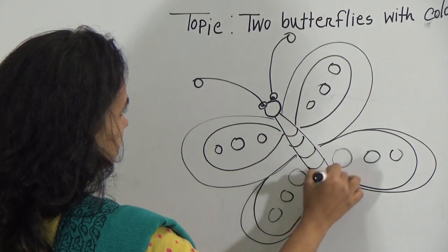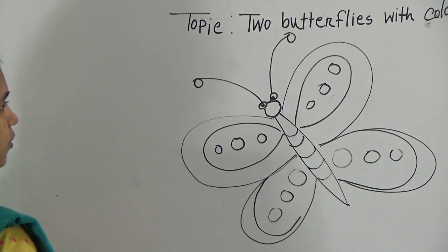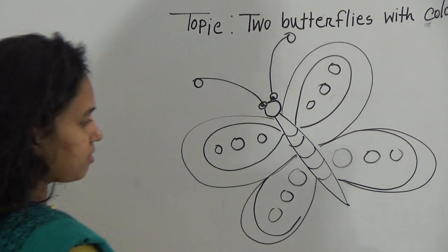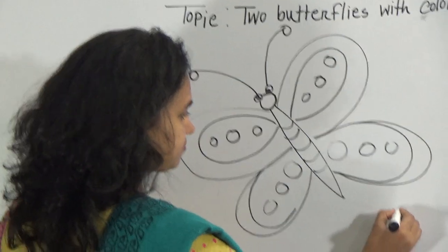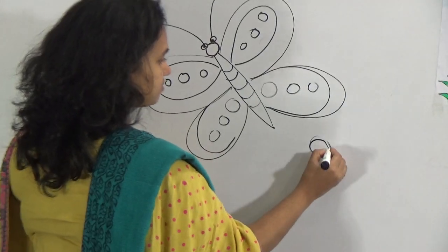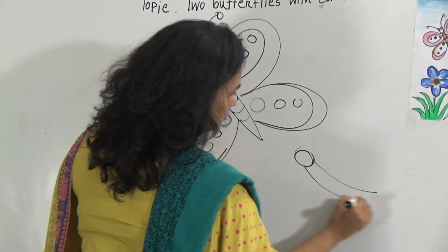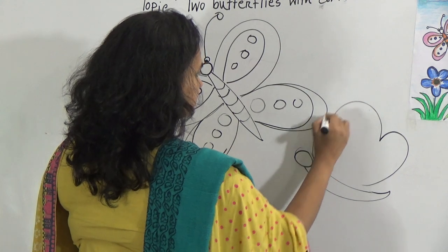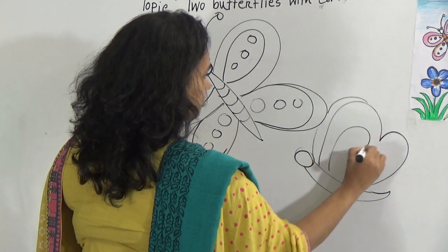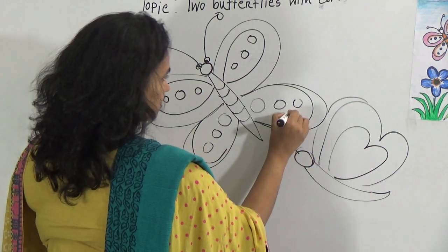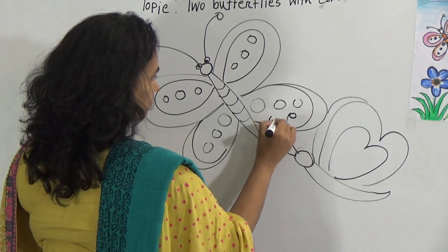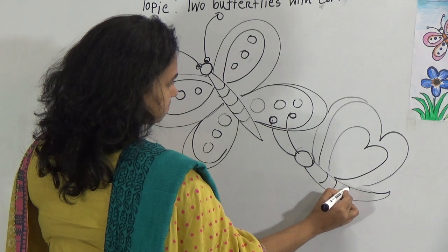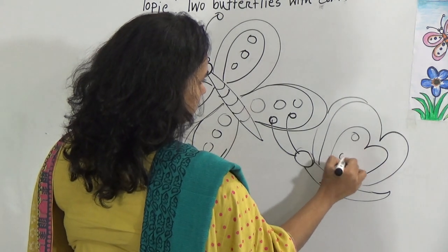So, though here mentioned that two butterfly, we will draw another butterfly but not the same. Just draw like this. Again. Give the figure like this. And draw a B. And give under this. Give some bubble here also.